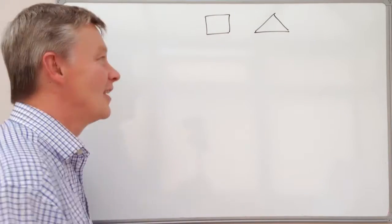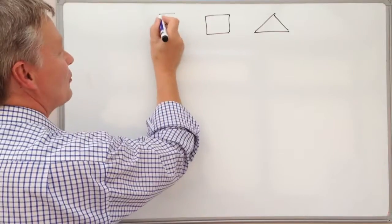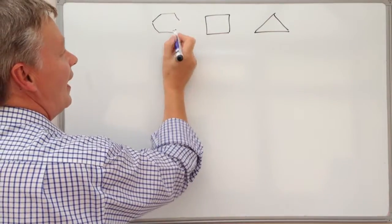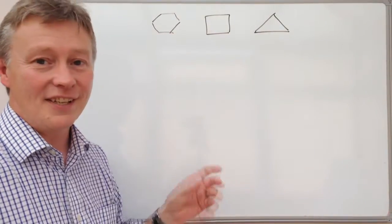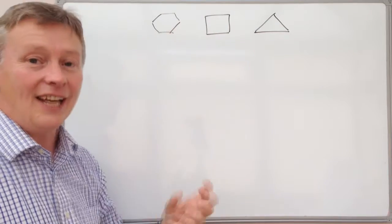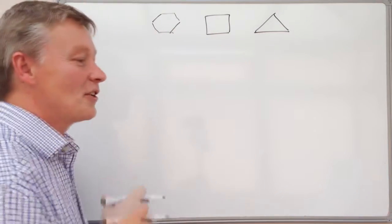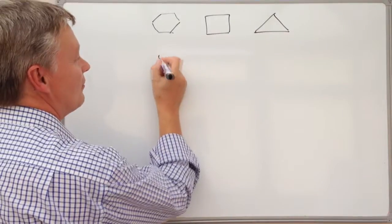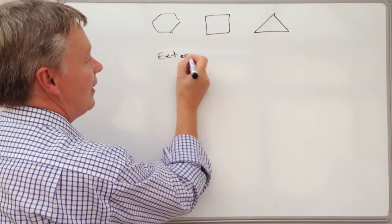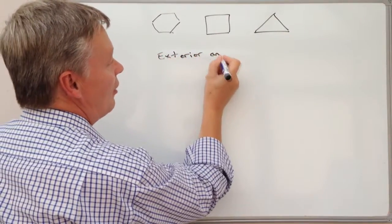I can't draw it very well, but that would be a hexagon. What it means is that the sides and the angles are all the same. A typical question will say something like: the exterior angles of a regular polygon is 45 degrees, and what they want to know is how many sides.